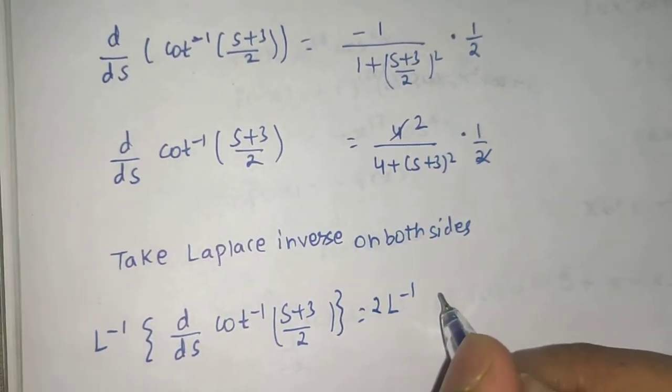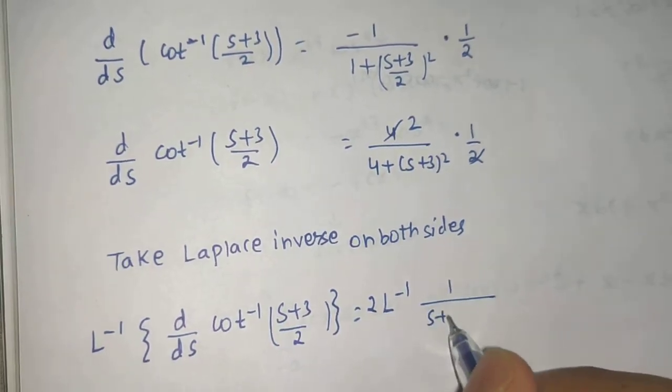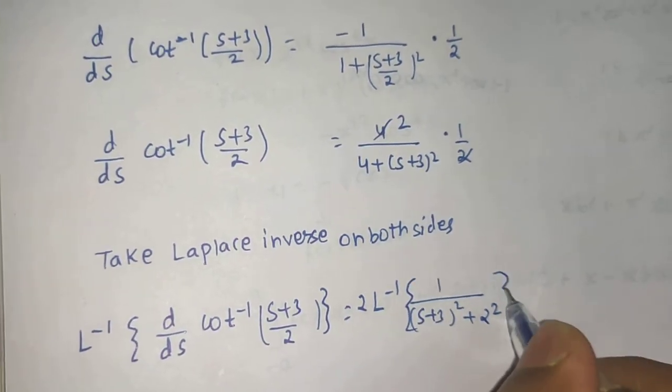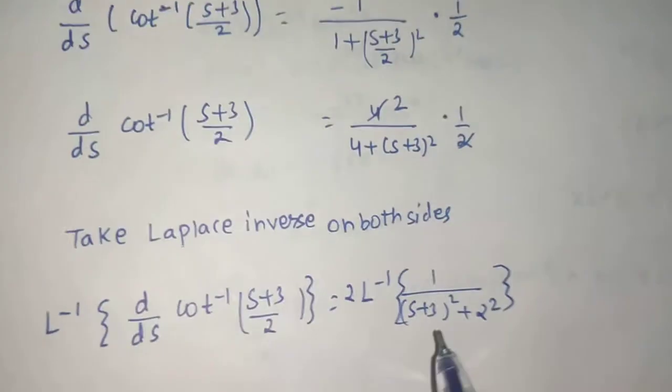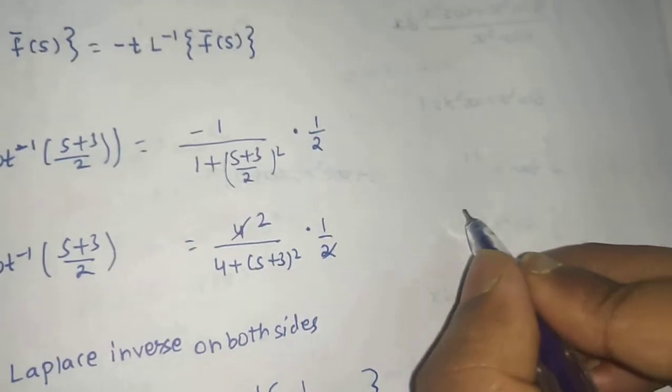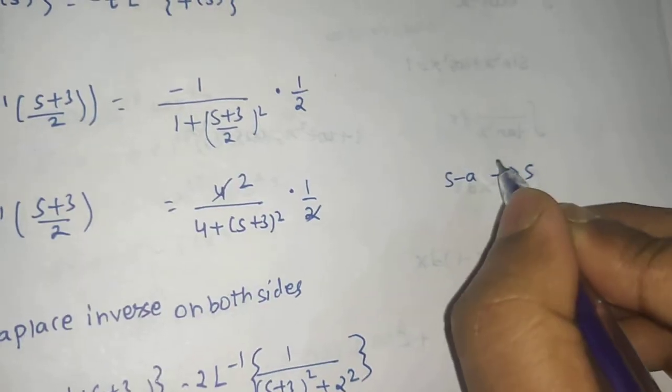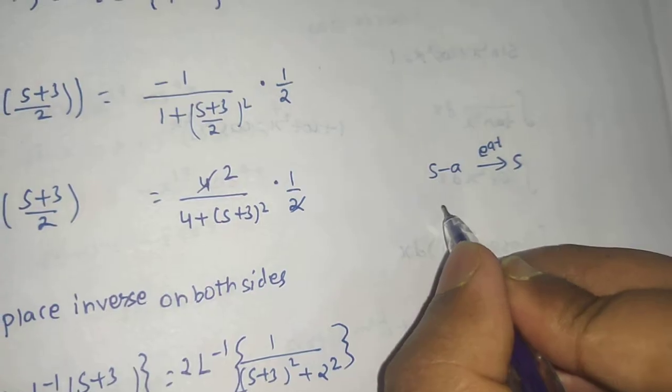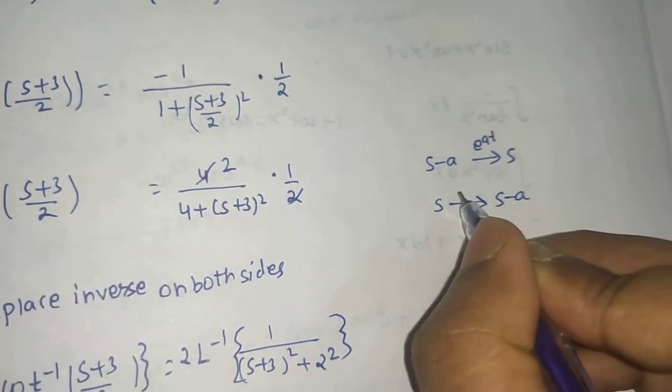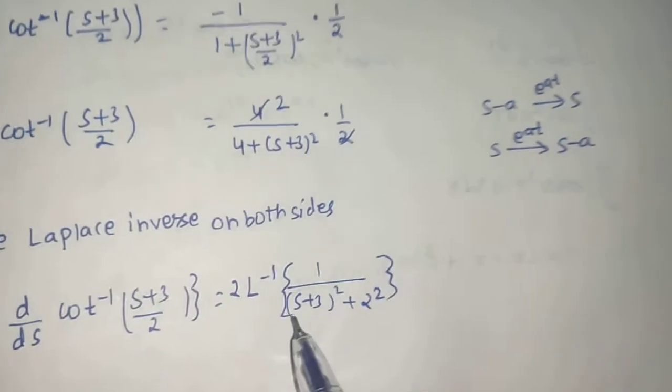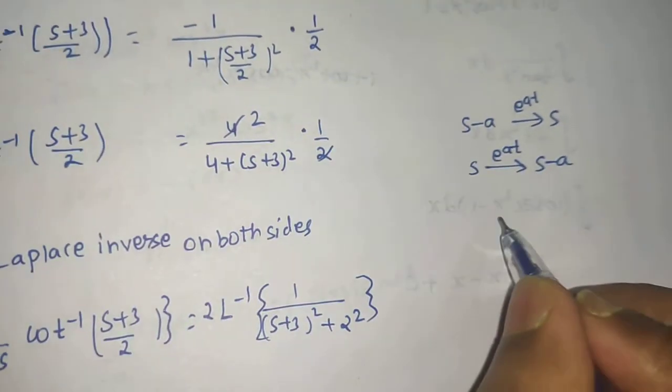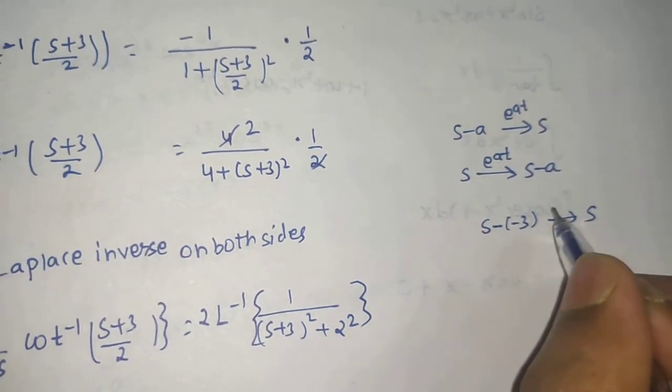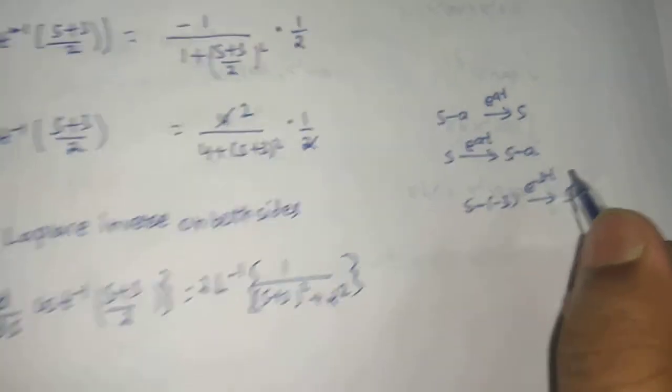We can write this as L^(-1){1/((S+3)^2 + 2^2)}. Using the first shift rule: when we move from S-A to S, we multiply by e^(At). Here, moving from S+3 to S means multiplying by e^(-3t).